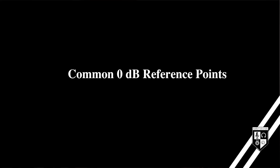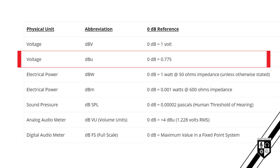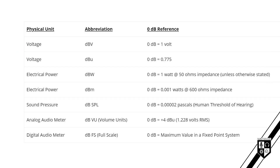For many applications in audio production, there are standardized reference points that define 0 dB in absolute terms. Each application has its own suffix — dBm, dBu, dBSPL, etc. Here is a helpful chart that defines the 0 dB reference point in common audio applications. This chart brings meaning to the various types of decibels.